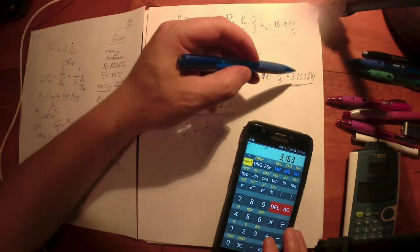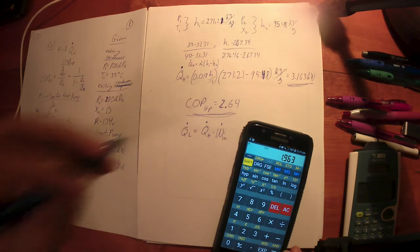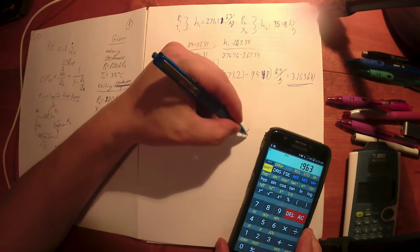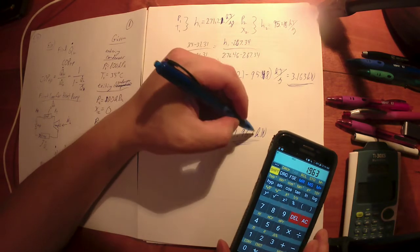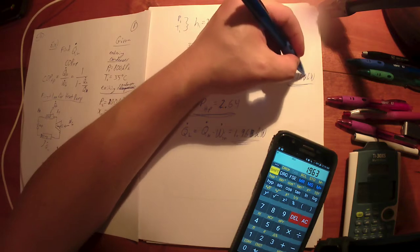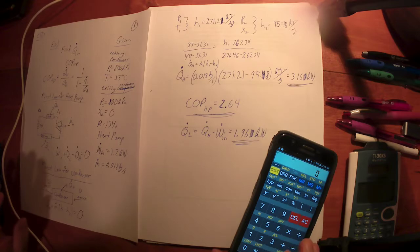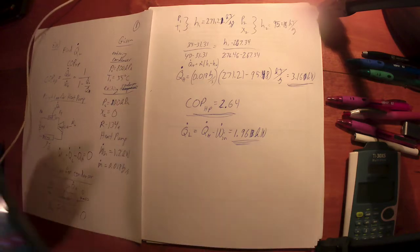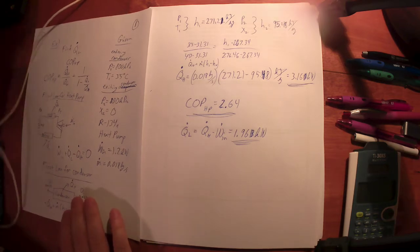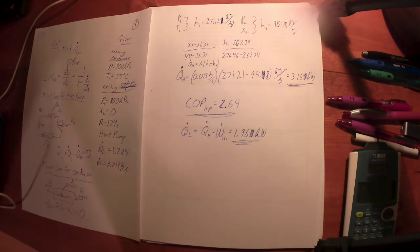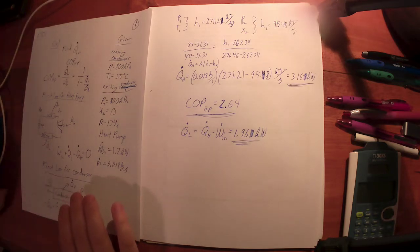3.163 minus the 1.2 equals 1.963. 3.163 kilowatts. You probably don't even need that third significant digit honestly. Three significant digits would be just fine, we don't need the fourth one. If you have questions let me know. That's kind of a nice simple example problem, chapter six type example problem, nice heat pump example.